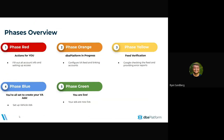Here are the phases and the timeline of how vehicle ads works through DBA. The first phase is Phase Red, then Phase Orange, Phase Yellow, Phase Blue, Phase Green. Phase Red is actions for you. Phase Orange is actions for DBA. Phase Yellow is feed verification. Phase Blue is you're ready to create your ads. And then Phase Green — the ads are serving and you're live.